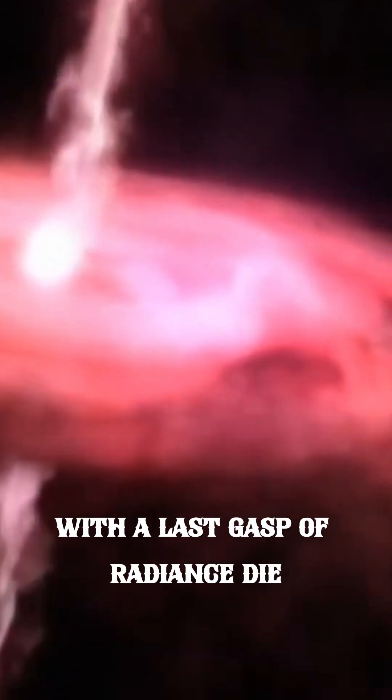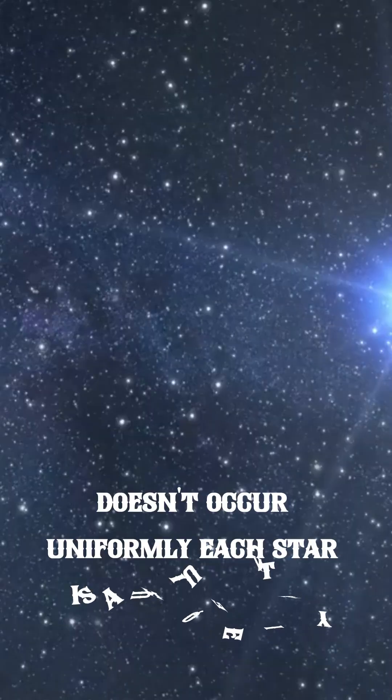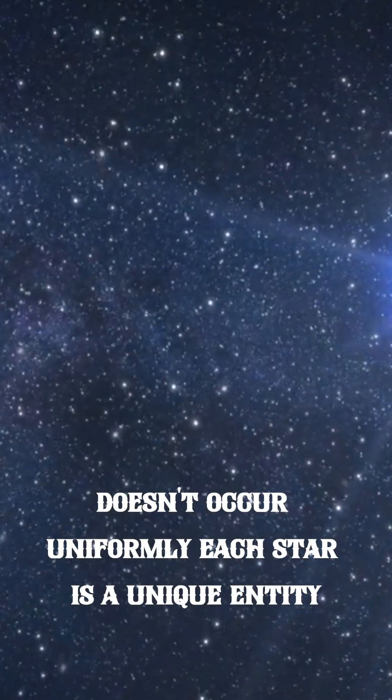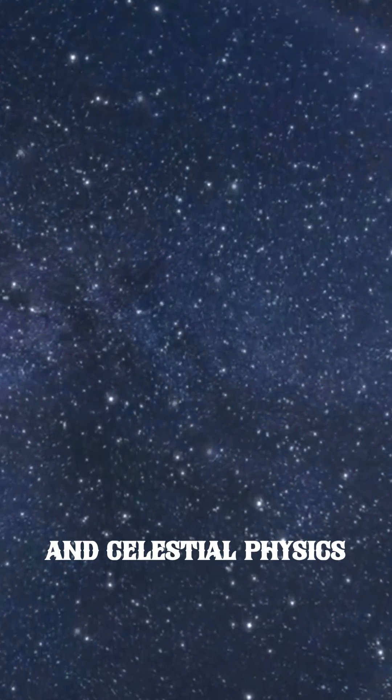Stars, much like people, undergo various stages throughout their lives. They burn, shine, expand, and ultimately, with a last gasp of radiance, die. This cycle, though universal, doesn't occur uniformly. Each star is a unique entity, its life story written in the language of nuclear fusion and celestial physics.